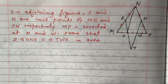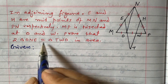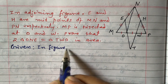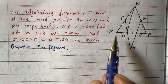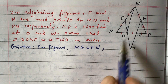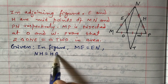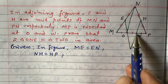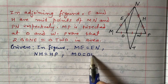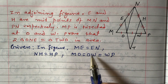Let us begin by writing the given conditions. Given: ME equals EN (E is the midpoint of MN); NH equals HP (H is the midpoint of PN); and MO equals OW equals WP, since MP is trisected into three equal parts.